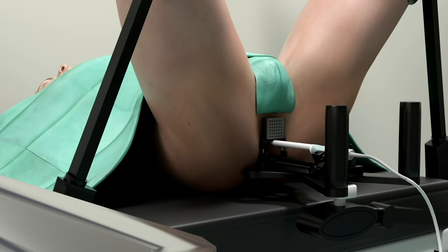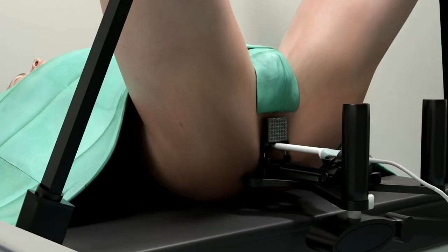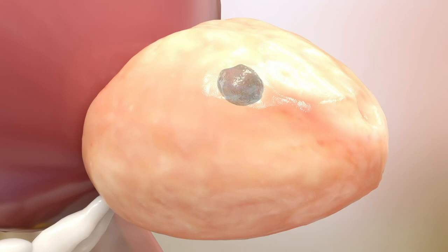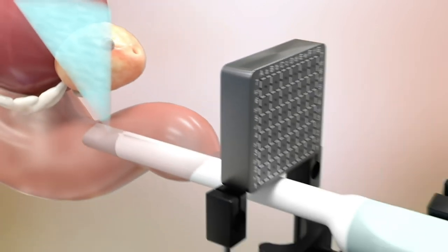The patient is placed in the dorsal lithotomy position at the edge of the table. The ultrasound is then inserted into the rectum, and the prostate is contoured and registered.